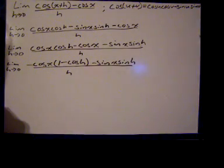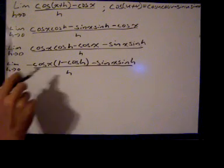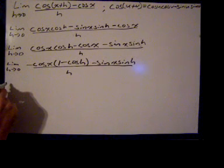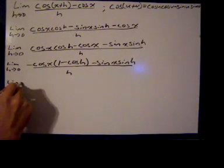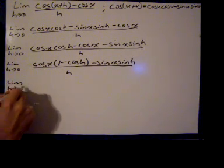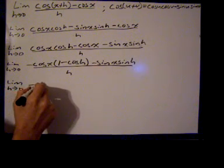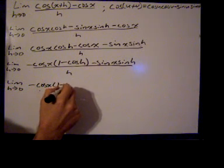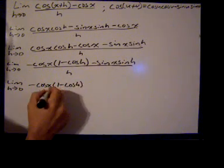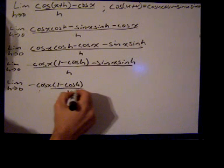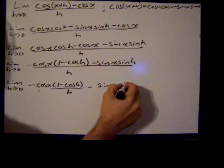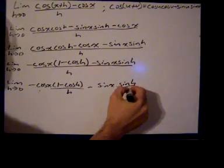Now I'm going to break up this quotient into the sum of two quotients. So the limit as h goes to zero of negative cosine of x times one minus the cosine of h divided by h, minus the sine of x times the sine of h over h.